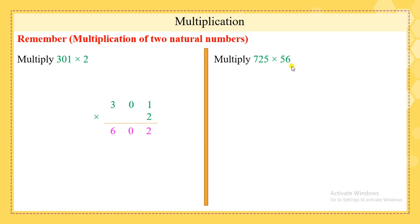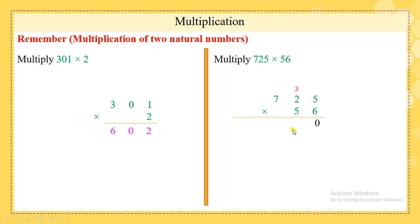Multiply 725 times 56. The first step is to arrange these two numbers above each other. We will begin by multiplying 6 with all the digits found above it. 6 times 5 is 30 — we leave the 0 here and put the 3 above the 2. Now 6 times 2 is 12, plus 3 is 15 — put 5 here and 1 above the 7. Now 6 times 7 is 42, plus 1 is 43.